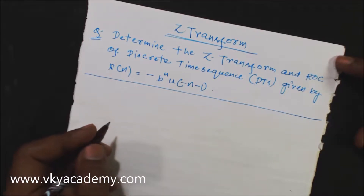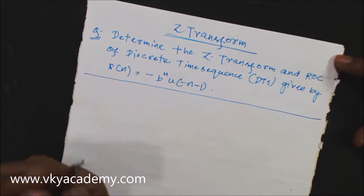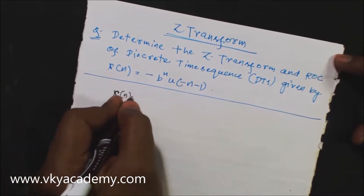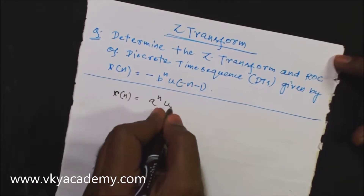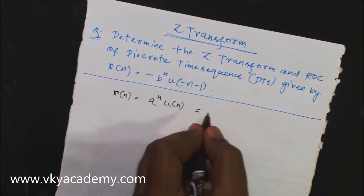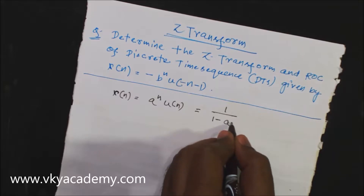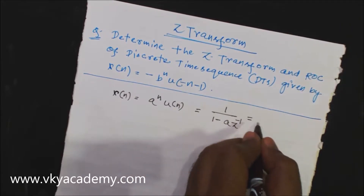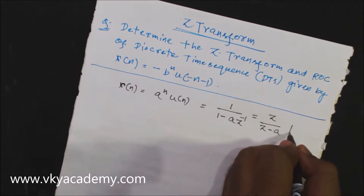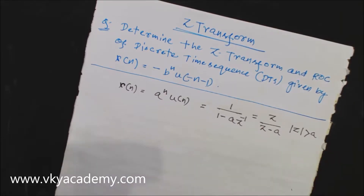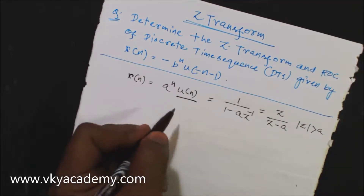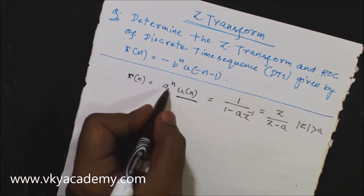Hello everyone. In the previous class, we solved one question on infinite duration sequence. The sequence was x(n) = a^n u(n) and the Z-transform was 1/(1 - az⁻¹), which can also be written as z/(z - a), and the region of convergence was |z| > a. This sequence was the causal sequence because u(n) was multiplied with the function a^n.